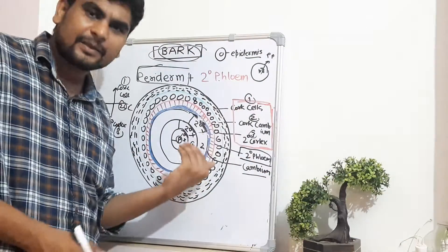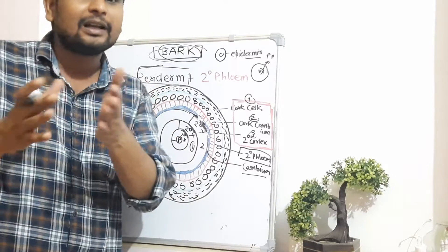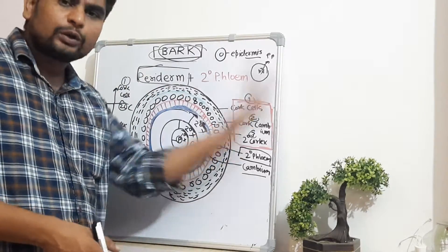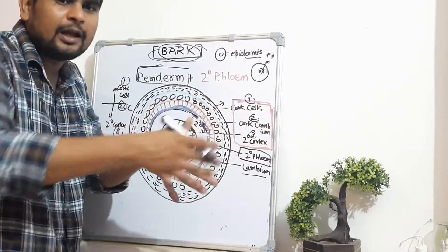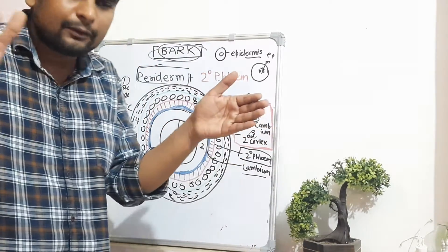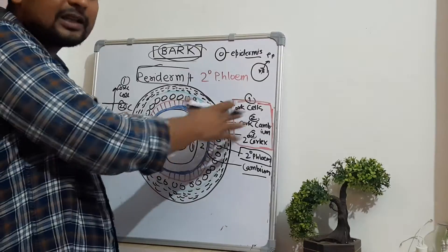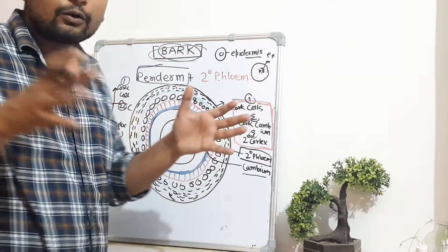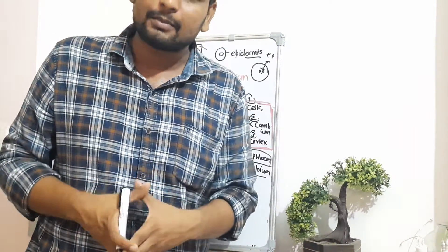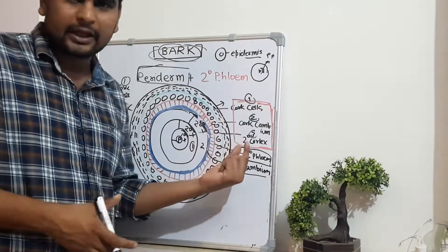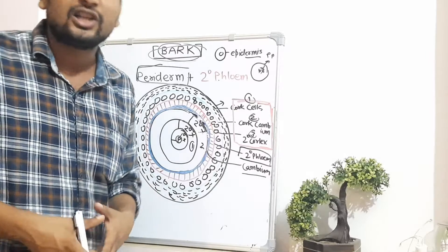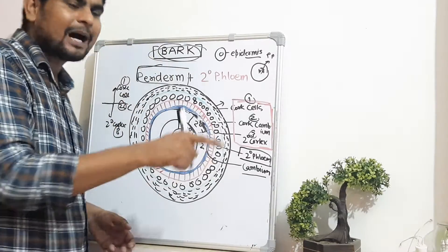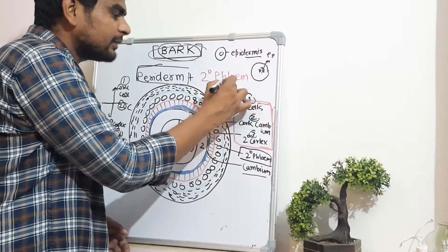Bark is of two types: inner bark, which is formed close to the cambium and contains living tissues, and outer bark, which is on the outermost side and consists of older, dead tissues. As new cells are added from the vascular cambium inward, the older bark gradually ruptures and falls off the plant in strips.